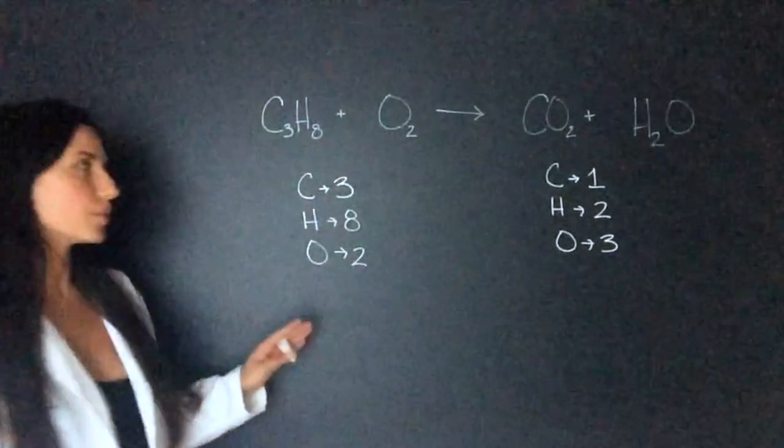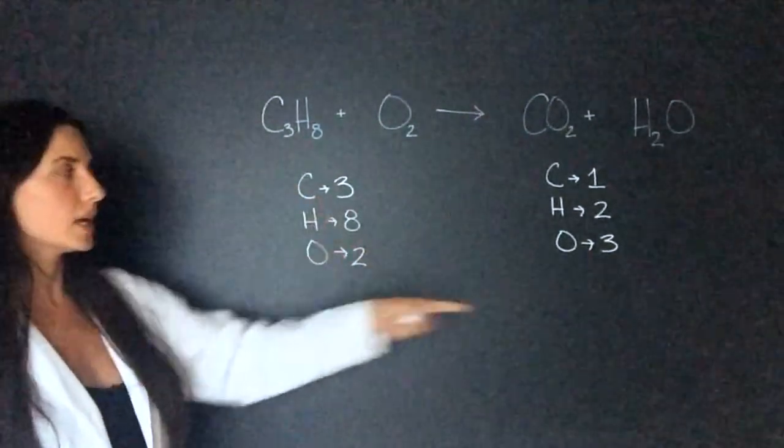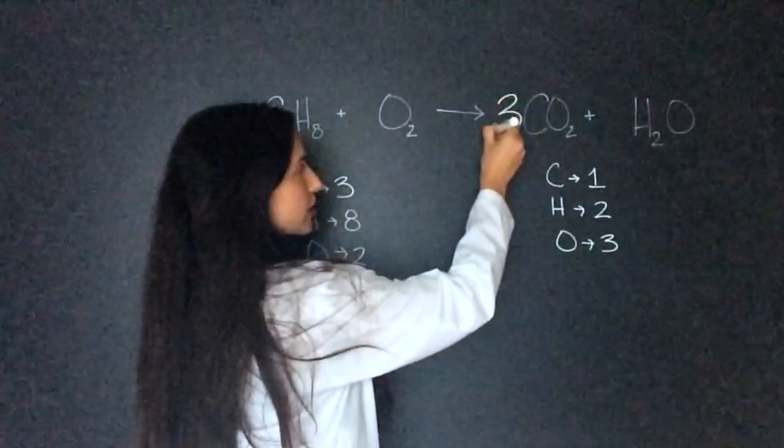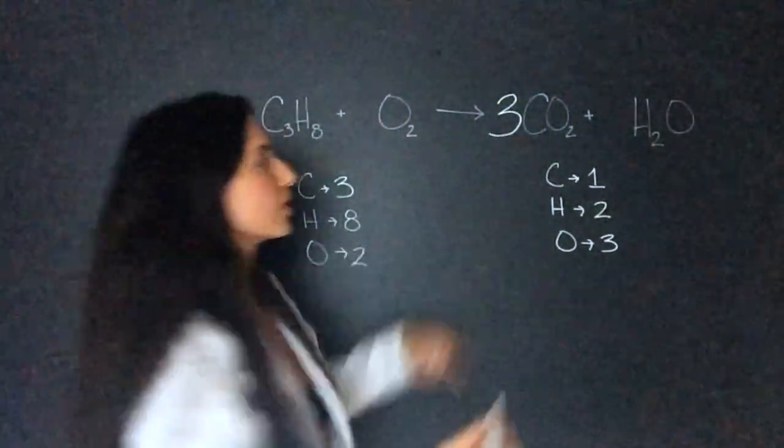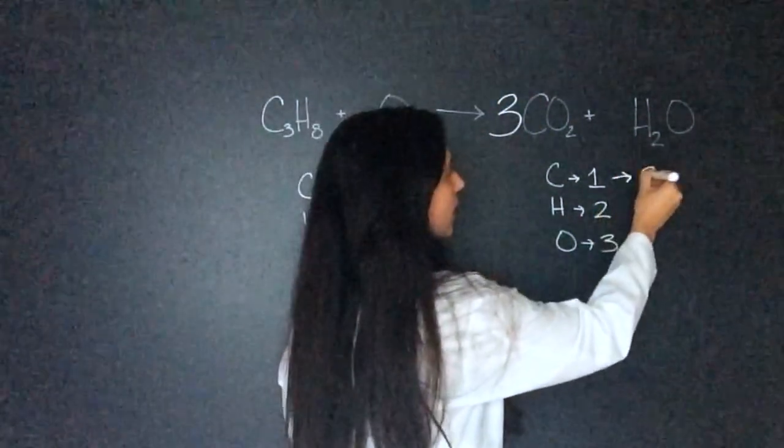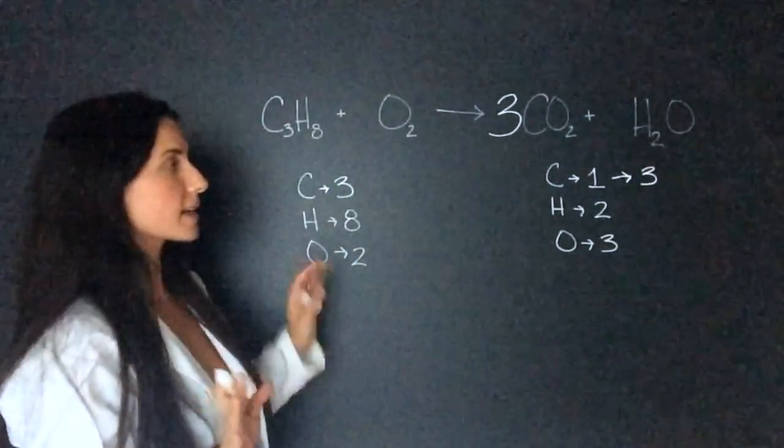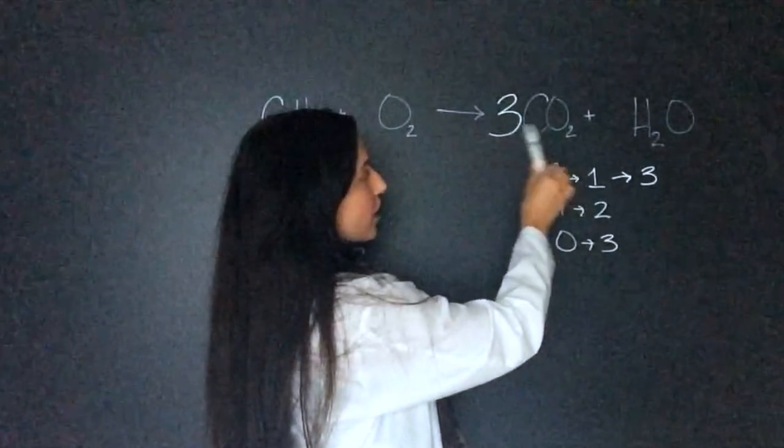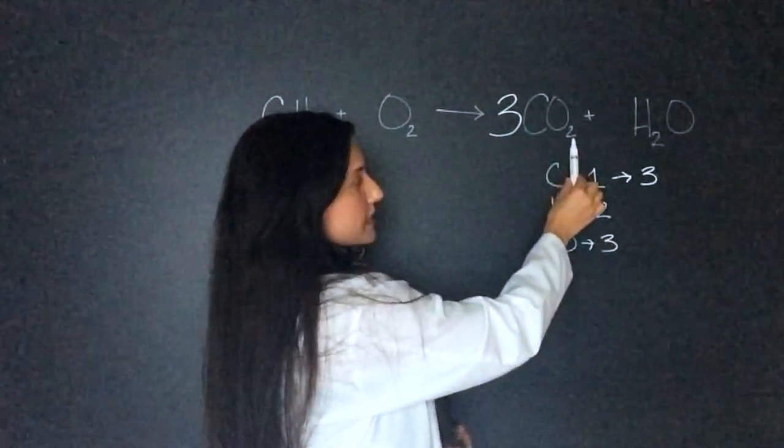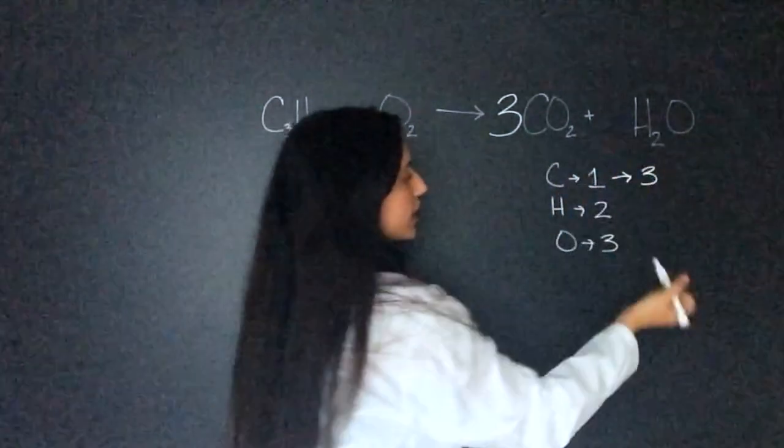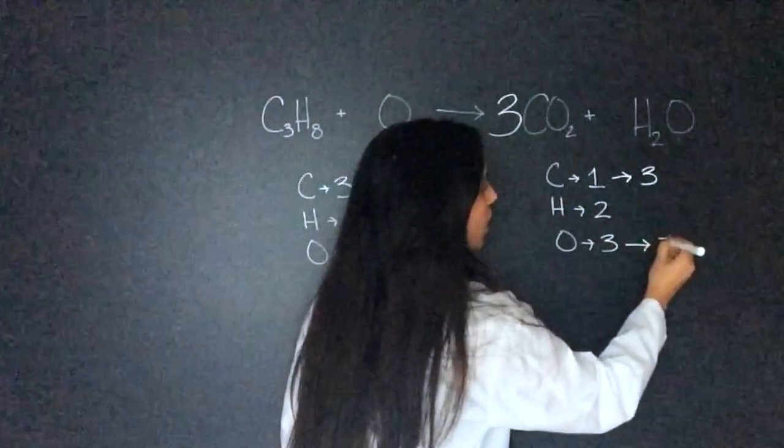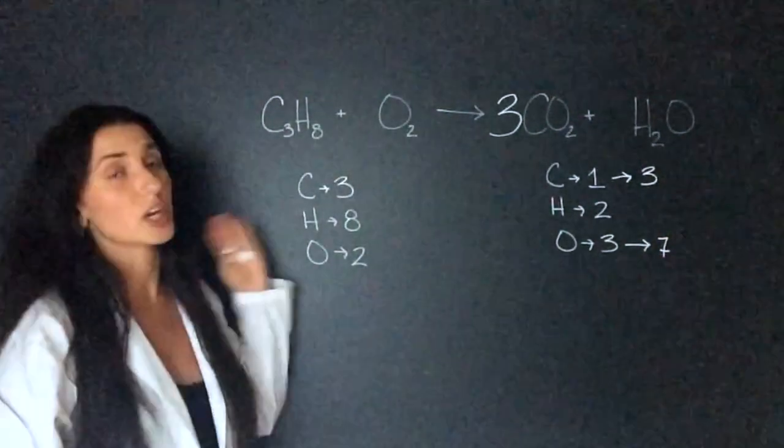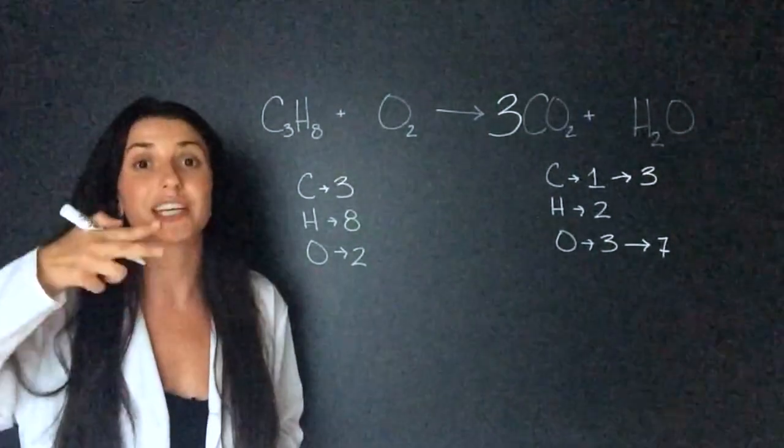So let's start with the carbon. We have three here and one there. So what we'll do is put a three over here. So now we have three carbon. So our carbons are checked, but now that changed our oxygen. Now we have three times two is six plus one over here. So now we have seven oxygen. We'll just leave that for now because remember we're going to go in order of carbon, hydrogen, then oxygen.